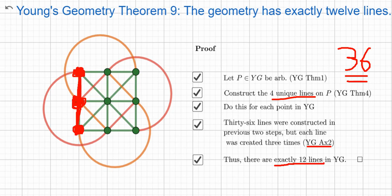Why is it exact? Well, because there are exactly four lines on P, we know that from theorem 4, and we do this nine times for each point in Young's geometry. There are exactly nine, which is theorem 7, I believe.